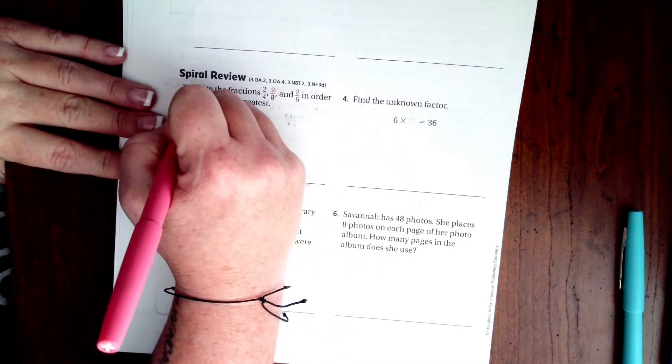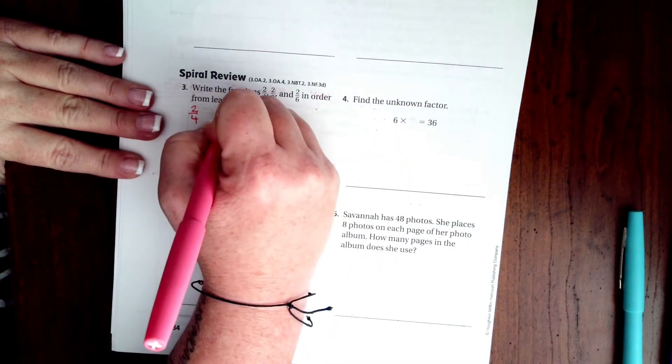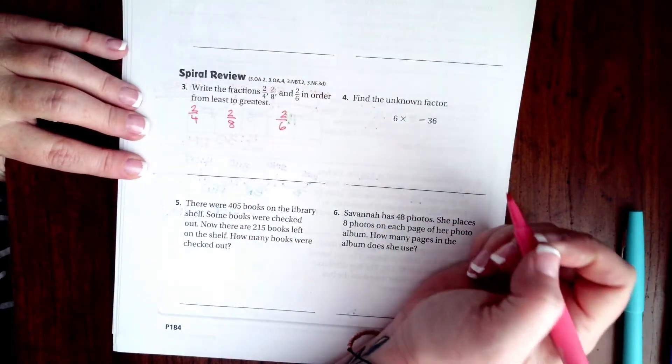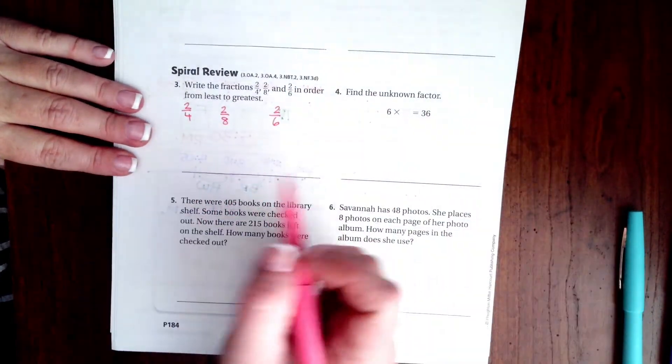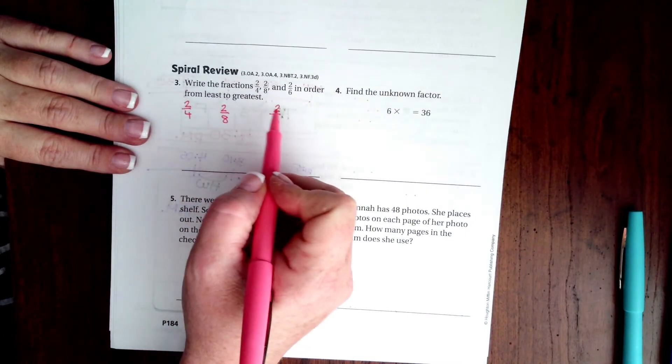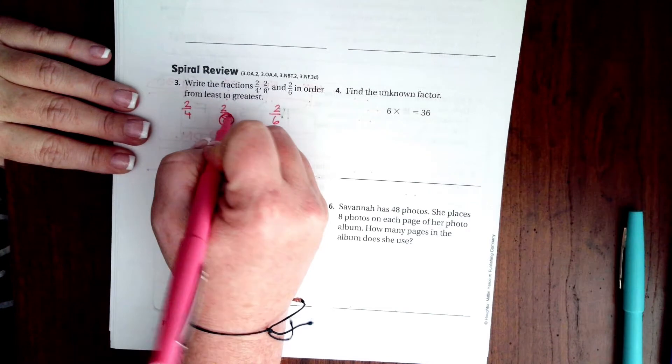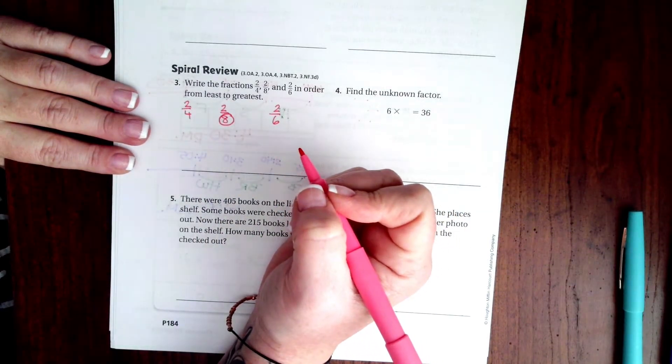So here's a secret. We have 2/4, 2/8, and 2/6. When the top number is the same, the one with the biggest number on the bottom is actually the smallest.